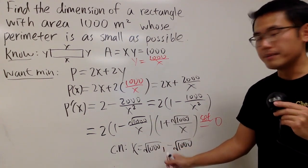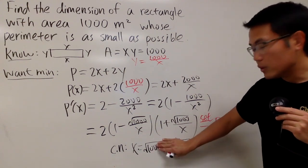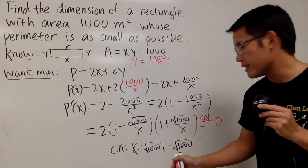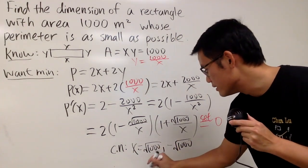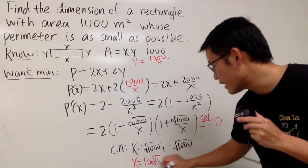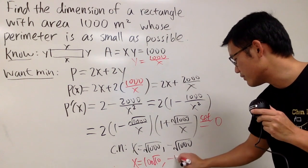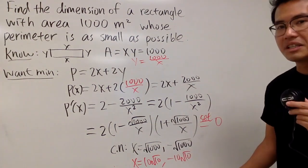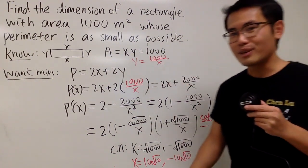And in fact, I can simplify this a little bit. This right here is the same as 100 times 10. And 100 is the perfect square, which is 10. So, this right here, I can say, this is the same as saying x equals 10 square root of 10. Likewise, this is just negative 10 square root of 10. And in fact, we don't really worry about the negative, because we are looking for the side of a rectangle.